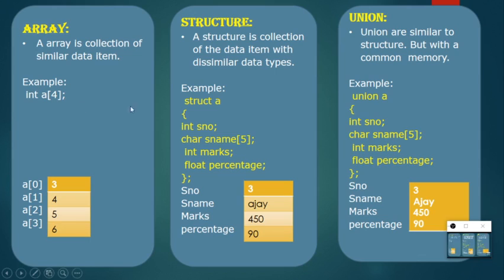This diagram shows the difference between array, structure, and union. Array is a collection of similar data types — for example a[0]=3, a[1]=4, a[2]=5, a[3]=6. If you try to assign a[1]=4.6, the compiler will not accept it because all declared data types must be the same. That's why array is called a collection of similar data types.